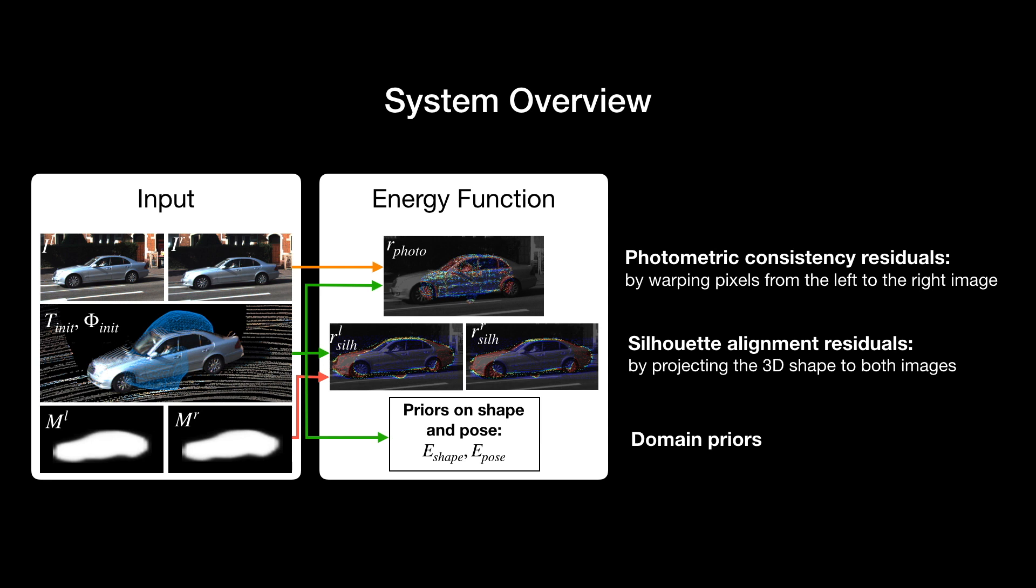The first one is the photometric consistency term. The idea is that for a pixel in the left image, we can find its corresponding 3D point by looking for the intersection point of the ray with the car surface. This point can then be projected to the right image, and the photometric residual measures the color difference. The second term is the silhouette alignment term, for which we project the car to the image based on its current pose and shape. We measure the consistency of the projection mask with the input segmentation mask. This is done for both the left and the right images.